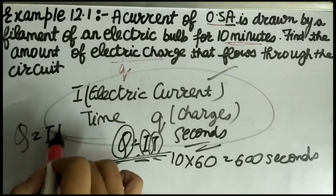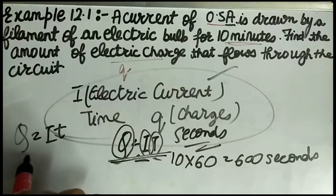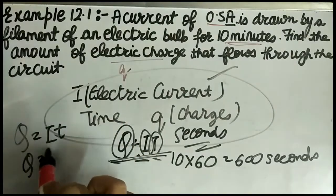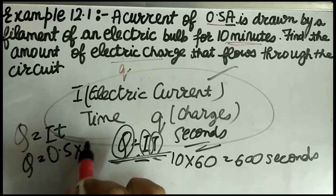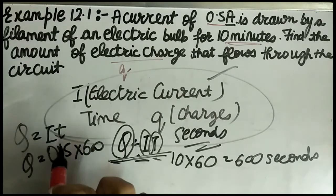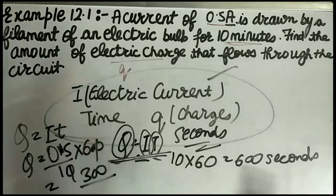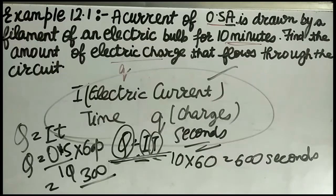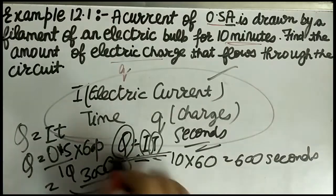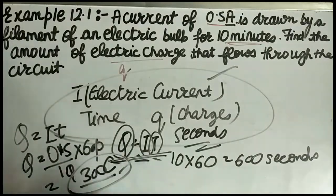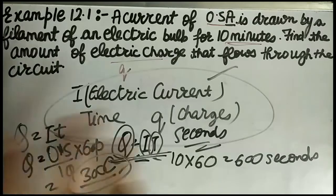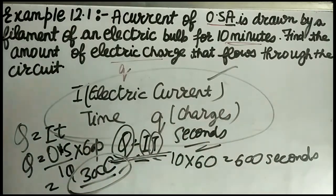So Q = I × T. We put in I = 0.5 and T = 600 seconds. That gives us Q = 0.5 × 600 = 300 coulombs. So this is our answer for Example 12.1. Now let us see the second example.